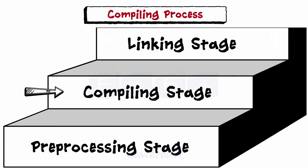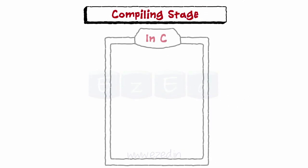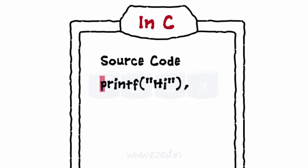Next stage is compiling stage. The source code received from the preprocessor is passed for finding the syntactical errors. If there are syntactical errors, the source code needs to be edited and modified, or else it is translated to object code.